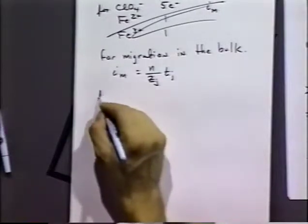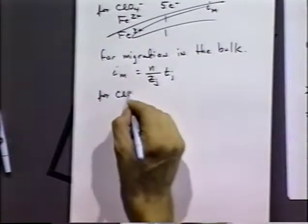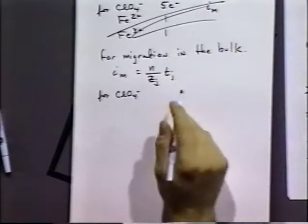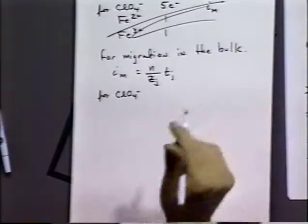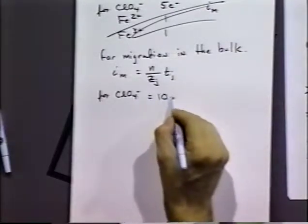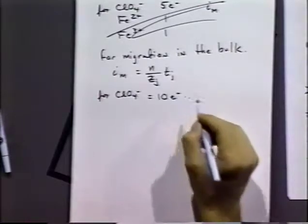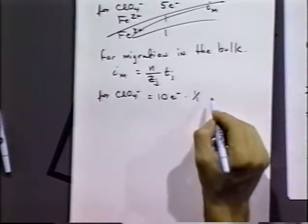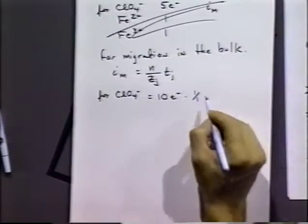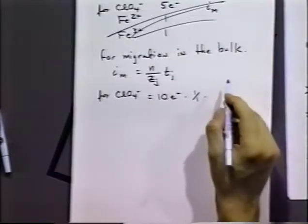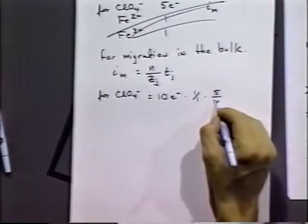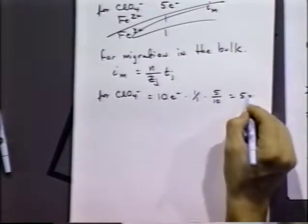So, for perchlorate, it's ten electrons times the charge, which is one, one over one, times the transference number, which is five tenths. And that equals to five electrons.